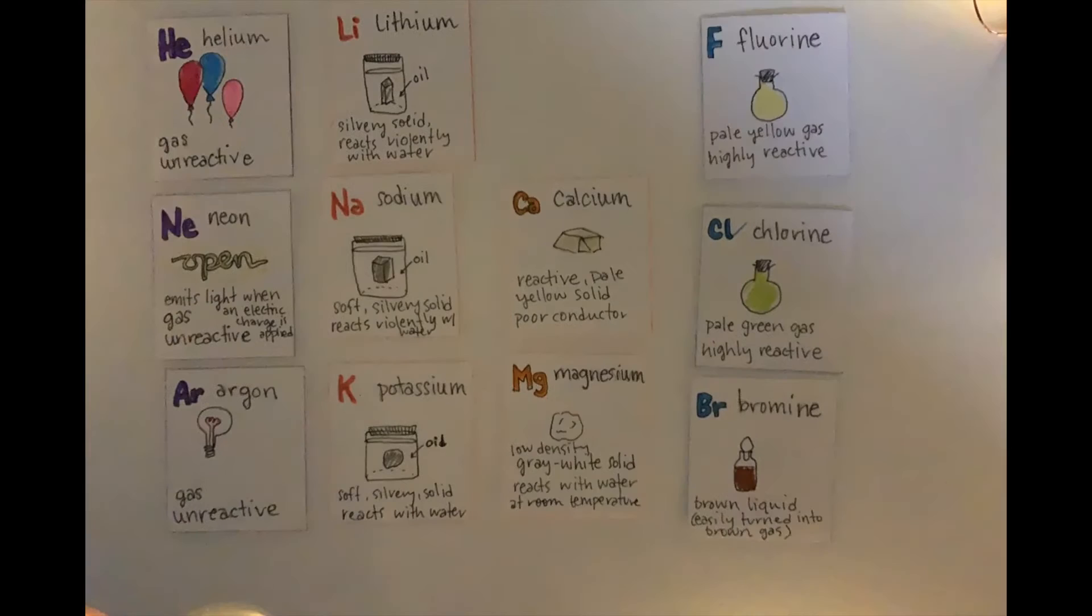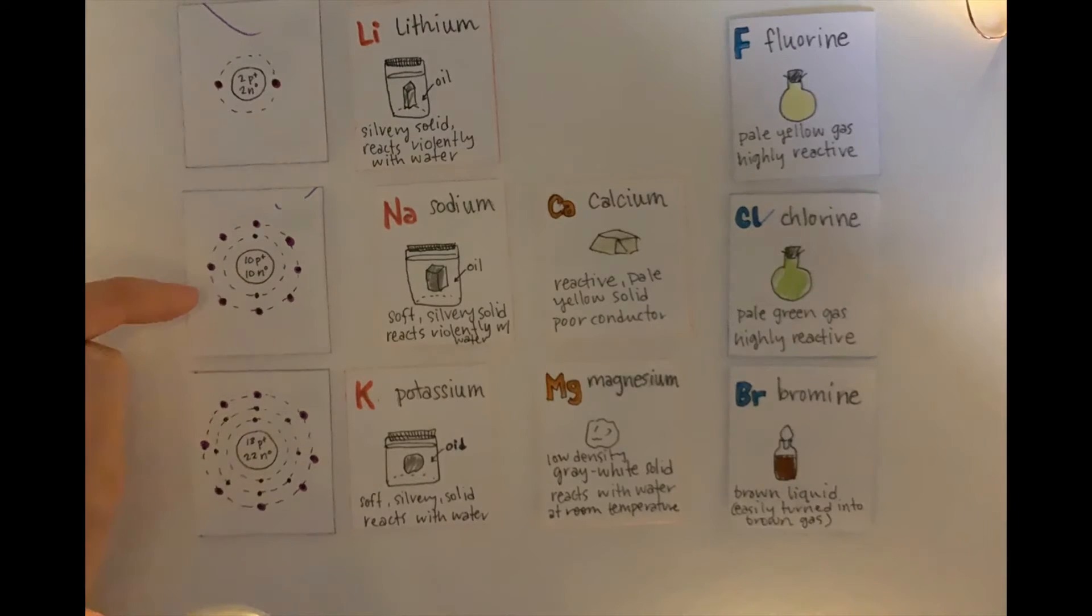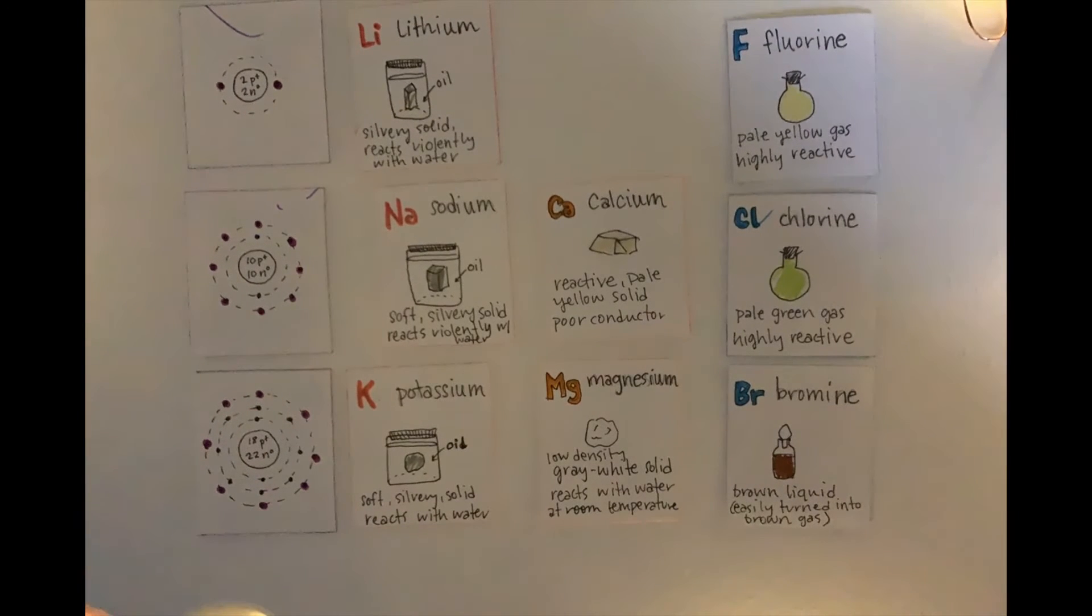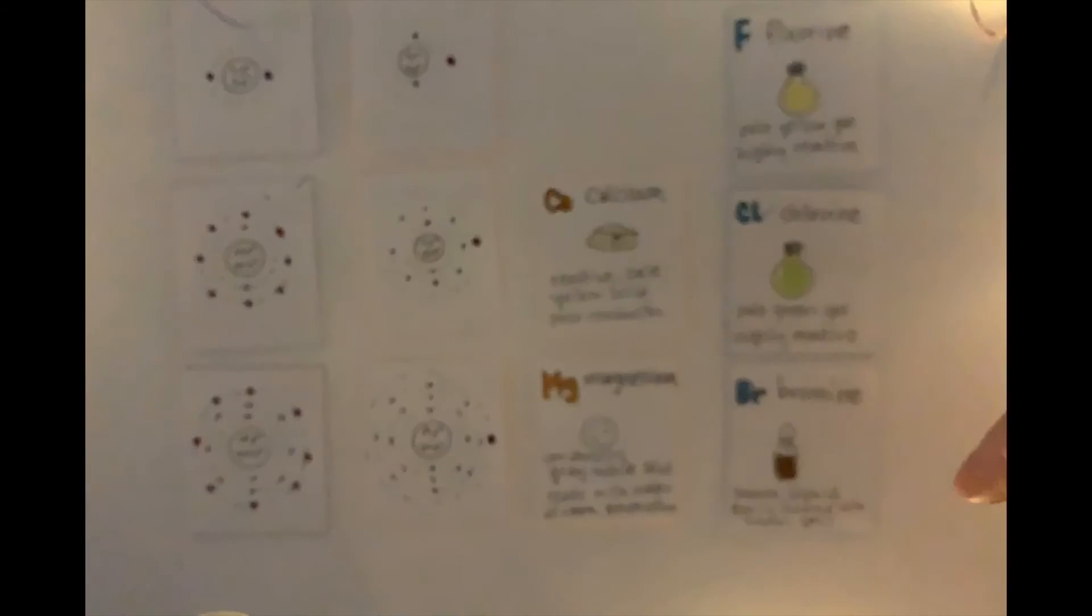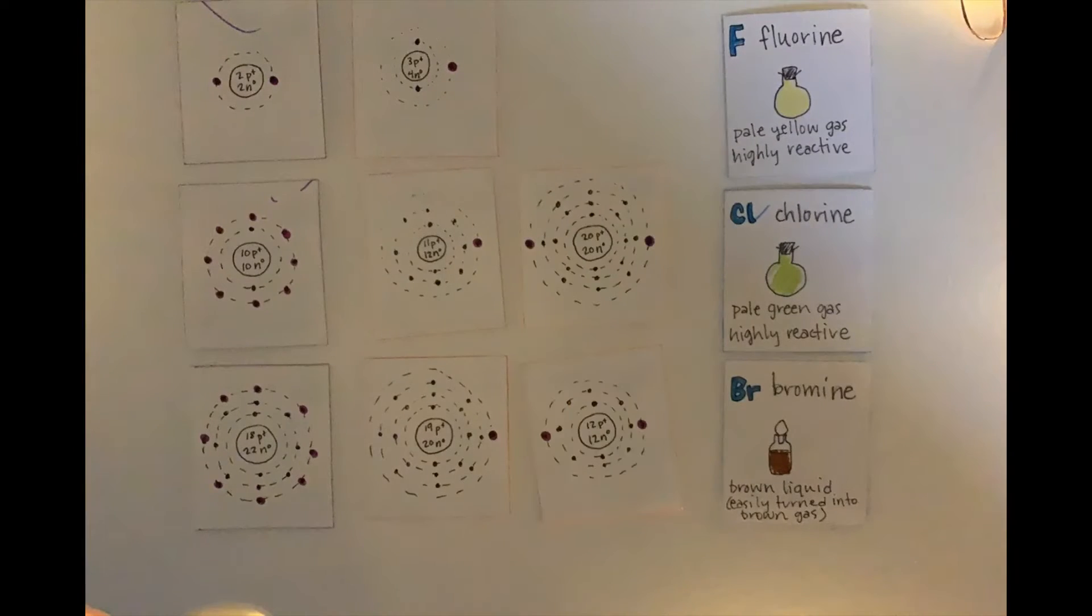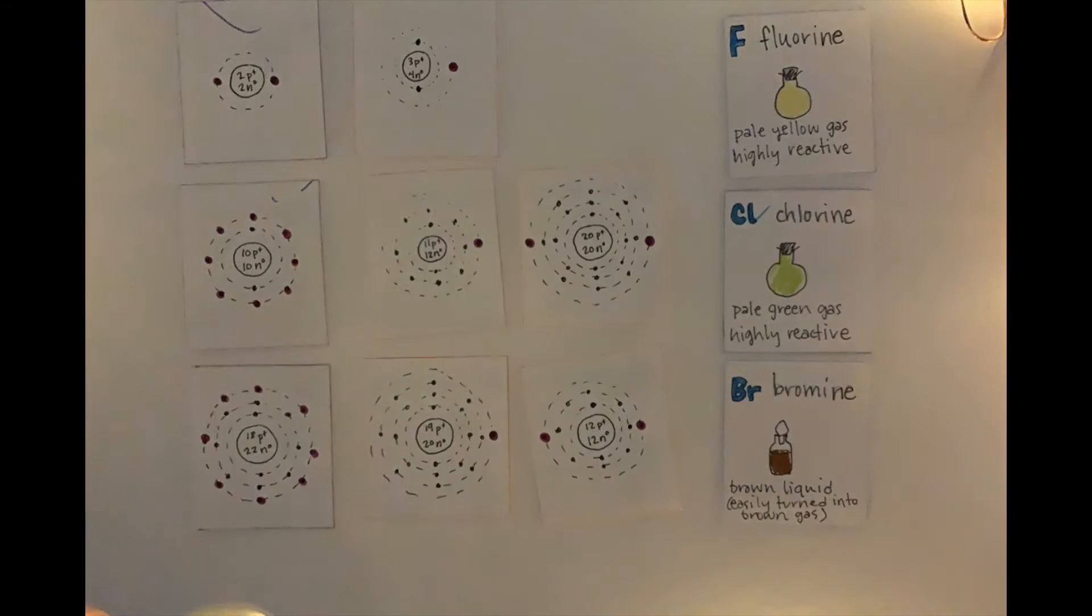In the periodic table of elements, all elements that are in the same column have the same amount of electrons in their outermost energy level. So we see that in our first column on the left, each one has a full outer shell.